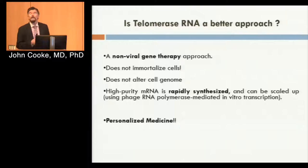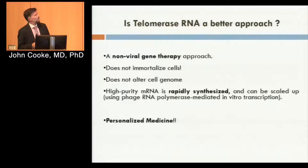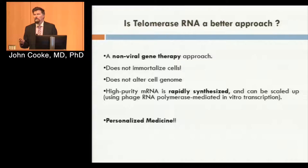The problem with this approach was that it used an integrating strategy — a retroviral H-TERT integrated into the endothelial cells, essentially immortalizing them. Would telomerase RNA be a better approach? Yes, because if it worked, RNA telomerase would not integrate into the cell and would not immortalize the cell, avoiding concerns about immortalization and cancer. And if we could make it work, it wouldn't alter the cell genome and we would have something potentially therapeutic.